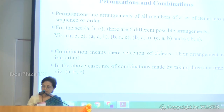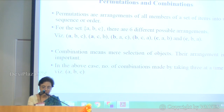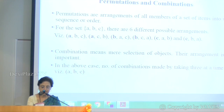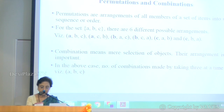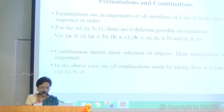Before proceeding further, it is necessary to differentiate between permutations and combinations. A permutation is a particular way of ordering some or all of a given number of items. The number of permutations that can be formed from a group of unlike items is given by the number of ways of arranging them. For example, A, B and C are three letters in a set. If written in a row one after another, there are six different possible arrangements. Each arrangement is a possible permutation of the letters A, B and C.